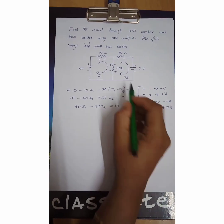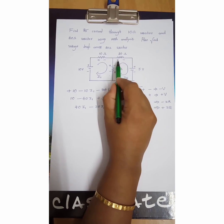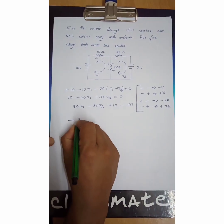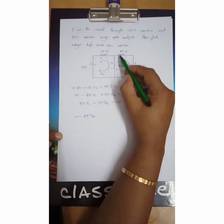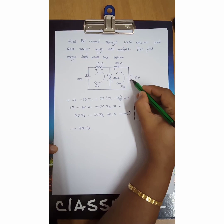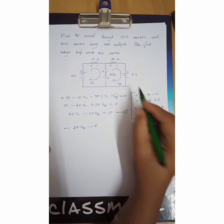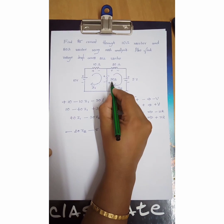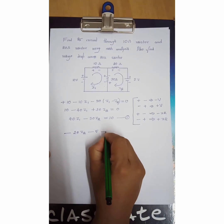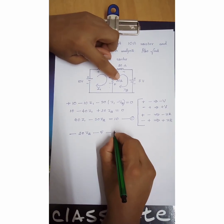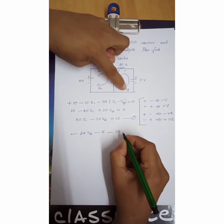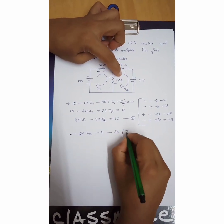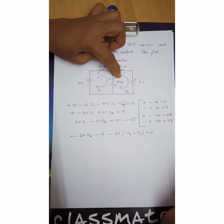Now for the second loop, we begin with the 20 ohm resistor. Moving plus to minus is a voltage drop, so we start with minus 20I2. Moving from plus to minus at the EMF source means minus V, so that is minus 5. For the 30 ohm, again moving plus to minus is a drop. The net current: I2 flows upward and I1 flows downward, so for the second loop we take I2 minus I1. This gives minus 30(I2 − I1) = 0 as the second equation.